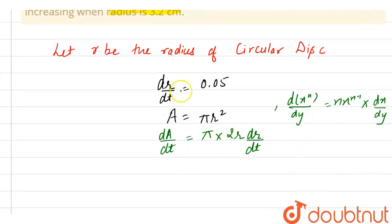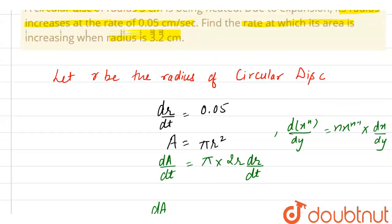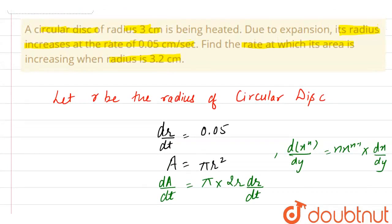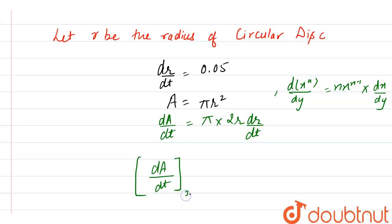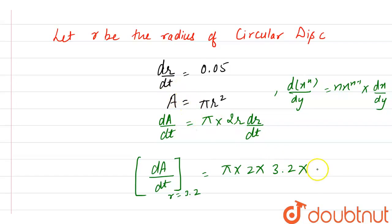Now here we have been given that dr/dt equals 0.05. So now let's put the values. The question says to find the rate at which its area is increasing when radius is 3.2 cm. This means we have to find when r equals 3.2. So let's put the values: pi into 2 into 3.2, into dr/dt equals 0.05.